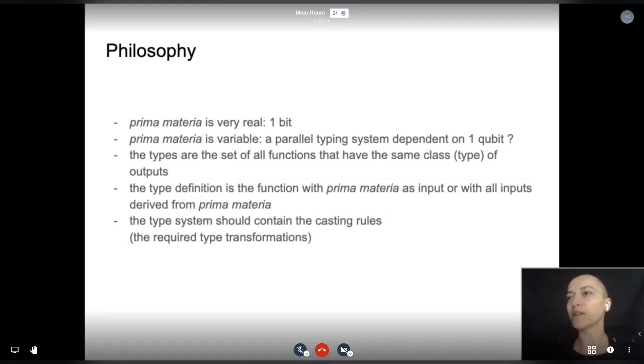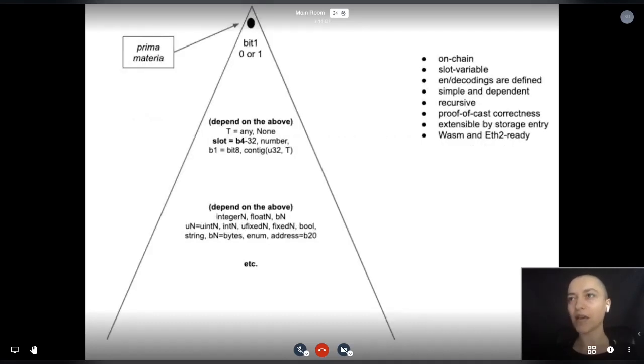Prima materia can be variable. For example, we are curious to see if dType will be flexible enough for a parallel typing system dependent on one qubit. For dType, types are functions and functions are types. Specifically, all functions with the same output of the same type represent that type. We should be able to travel from the type to prima materia, and this means its input is prima materia or derived from it.